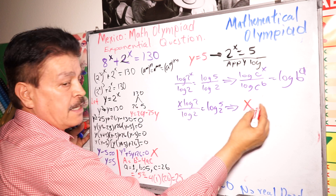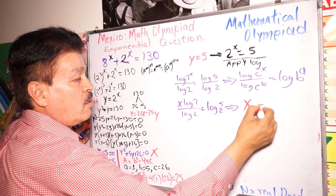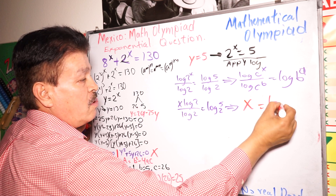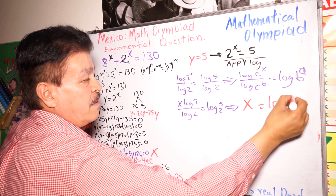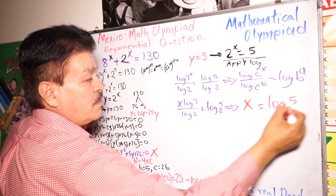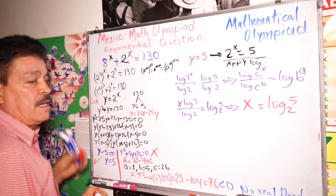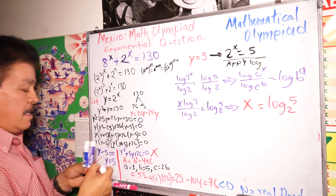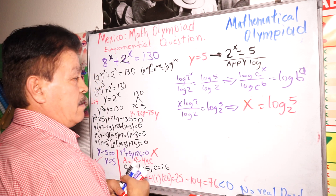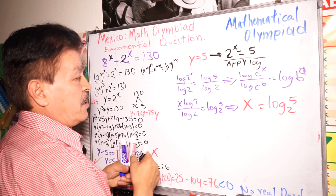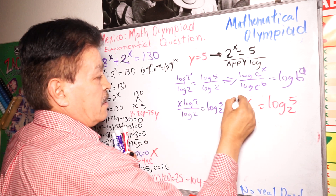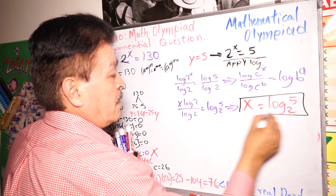The answer is X equals log 5 to the base 2, meaning log base 2 of 5. That is the answer — one solution.